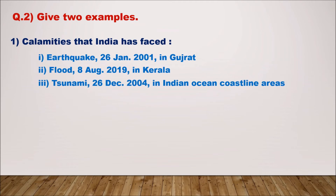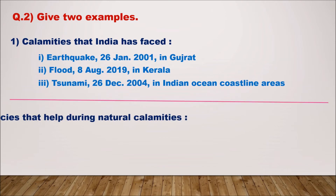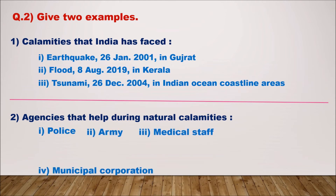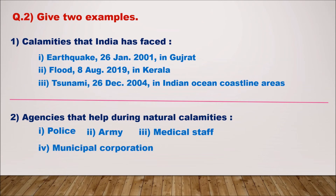One more example — tsunami: 26th December 2004 in Indian Ocean coastline areas. These are some examples. Question two: agencies that help during natural calamities — police, army, medical staff, municipal corporation, and NGOs.